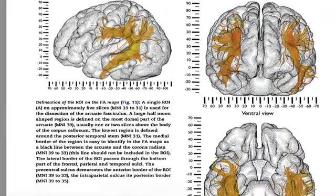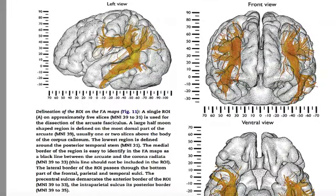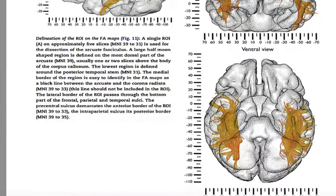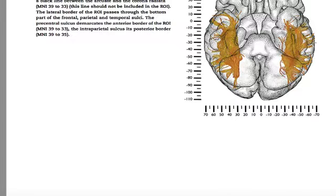Again, here we have a sagital vision, here we have a coronal vision, and here we have an axial vision.